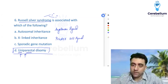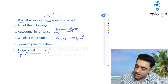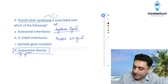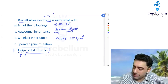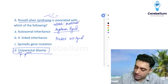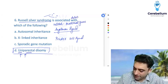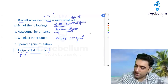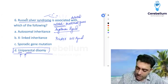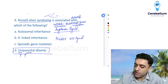In Angelman syndrome — remember, angel is the mother — the maternal gene is deleted and the paternal gene is doubled. So in Angelman syndrome, the maternal gene is deleted.